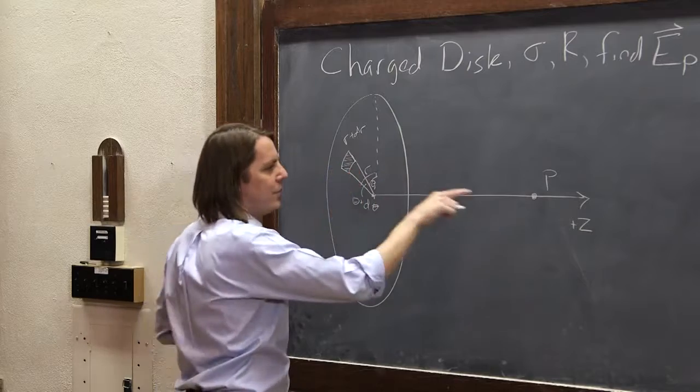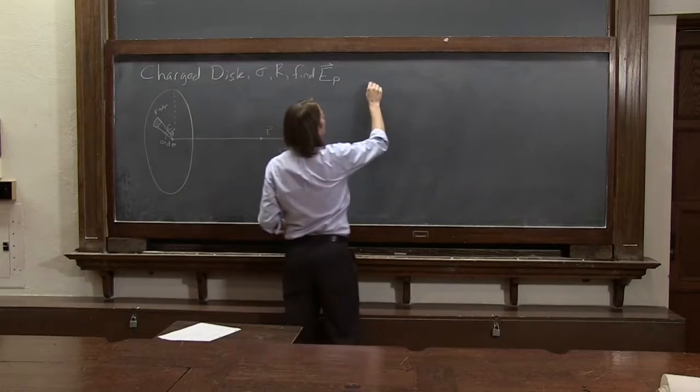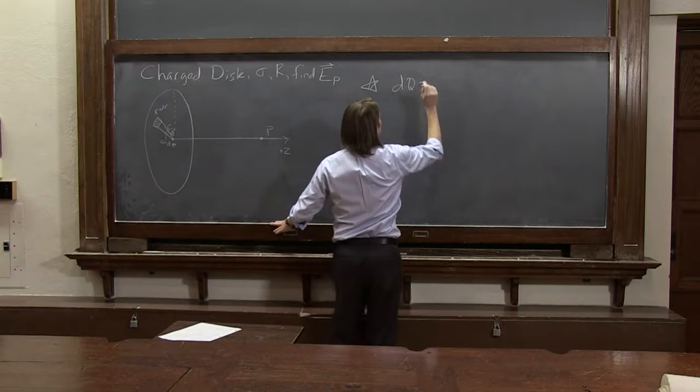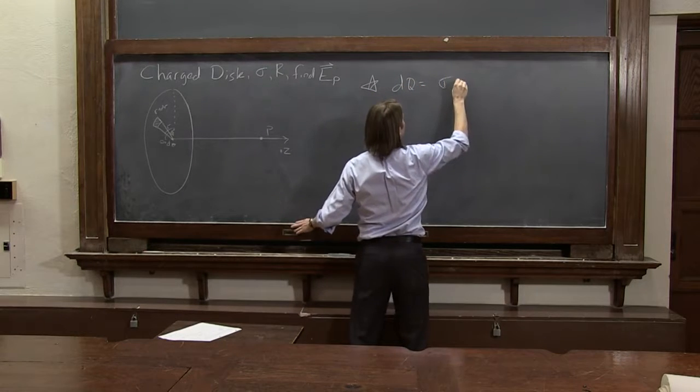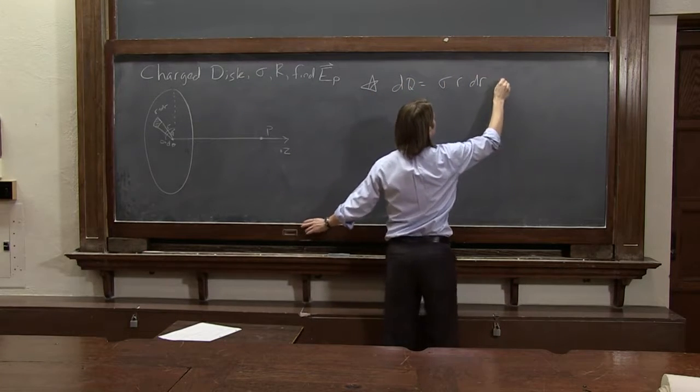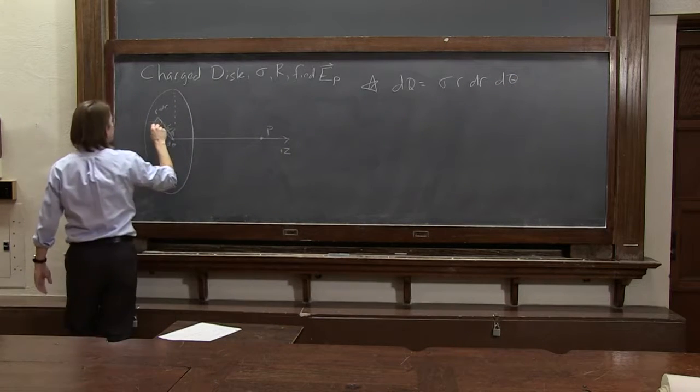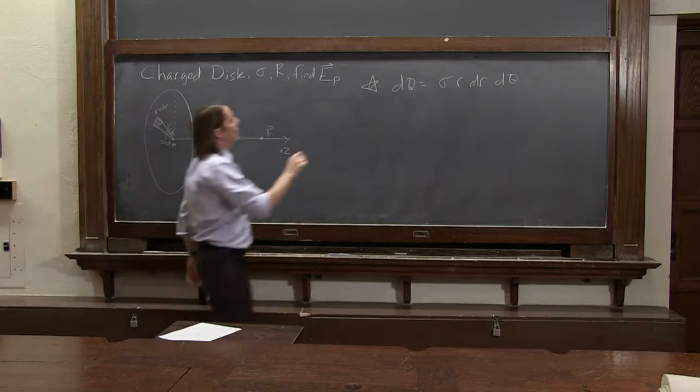Let's think about the field it's going to create at P. So first, let's say we now have our charge dq is, like we showed before, sigma r dr d-theta. There it is, right there. This is going to make a field. But now, here's the key.